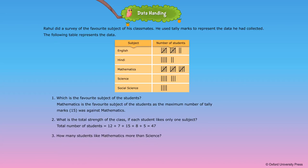3. How many students like Mathematics more than Science? Number of students who like Mathematics is equal to 5 plus 5 plus 5 is equal to 15. Number of students who like Science is equal to 5 plus 3 is equal to 8. Number of students who like Mathematics more than Science: 15 minus 8 is equal to 7.